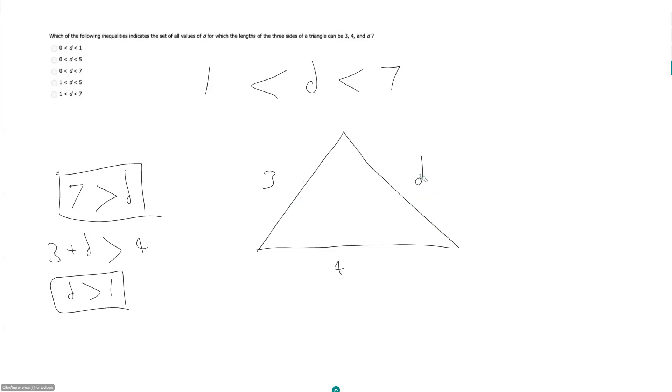It also means this side here plus this side here must be greater than this side here. So D plus 4 must be greater than 3, which means D must be greater than negative 1. So technically this is true as well.